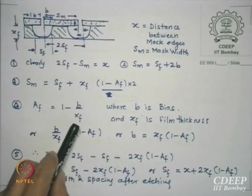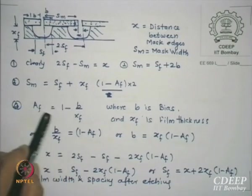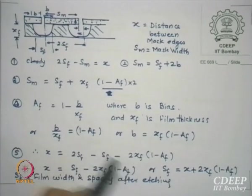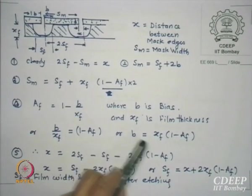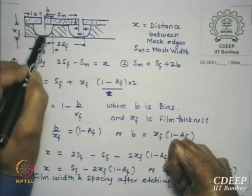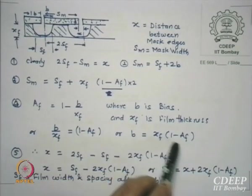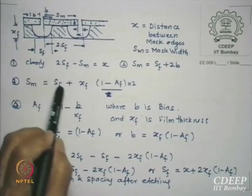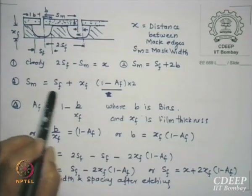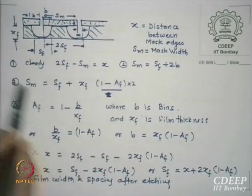AF equals 1 minus B divided by XF, the film thickness. So B upon XF equals 1 minus AF, giving B equals XF times (1 minus AF) — simple maths. SF is the distance shown here. If X equals XF, then deriving B equals XF(1 minus AF) and substituting back: SM equals SF plus 2 times XF(1 minus AF). This equation has been expanded to this form.